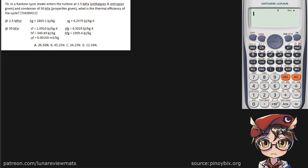In a Rankine cycle, steam enters the turbine at 2.5 MPa and condenser of 50 kPa. All the properties are given down here. What is the thermal efficiency of the cycle?